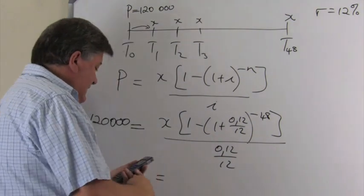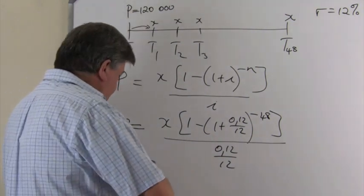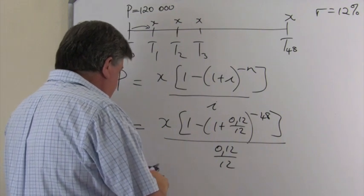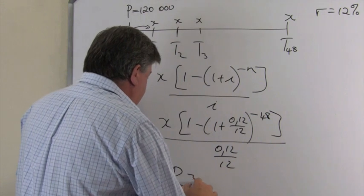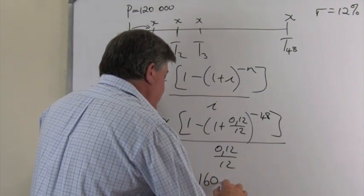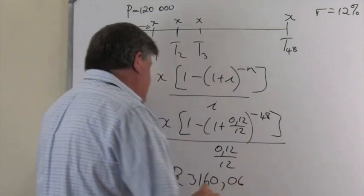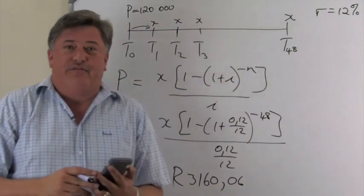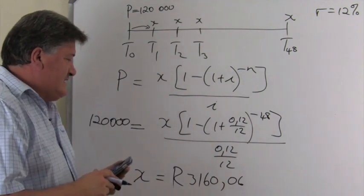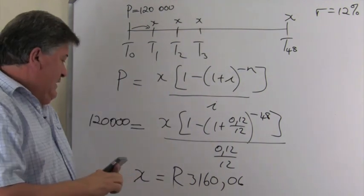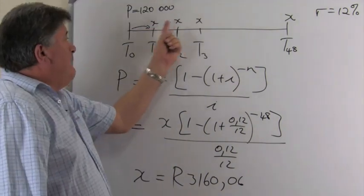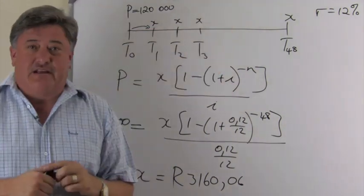And I've got an answer of 3,160.06. If I round it off to two decimals, 3,160 rand and 6 cents. What is the meaning of this answer? That is the monthly payment she's going to make.